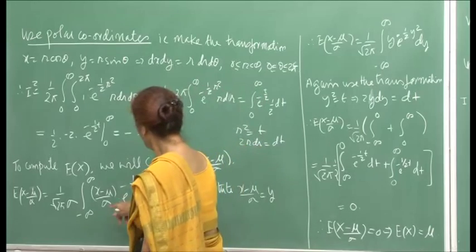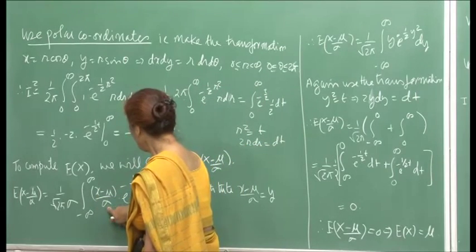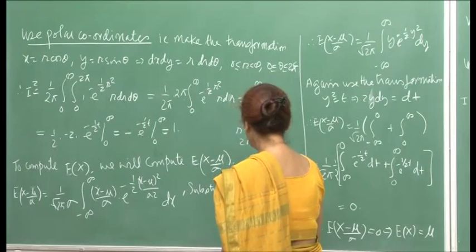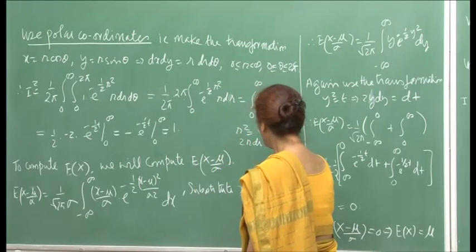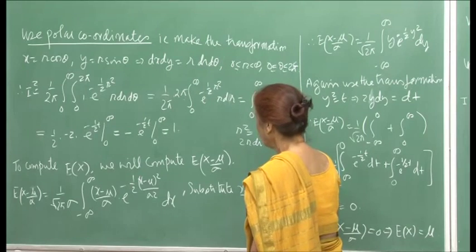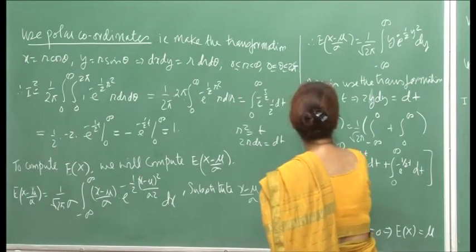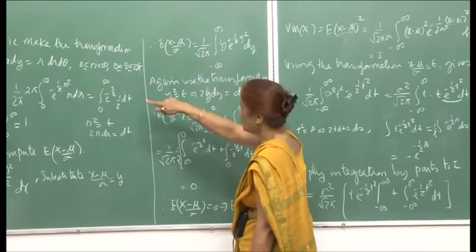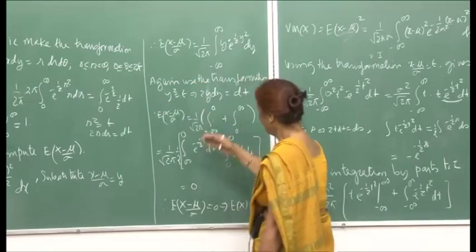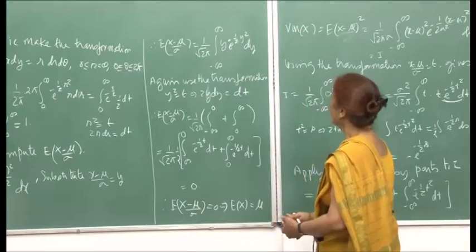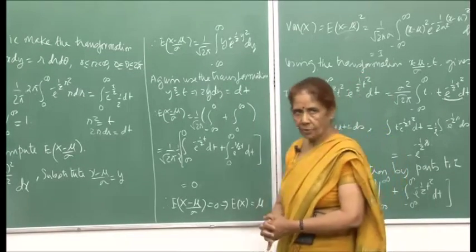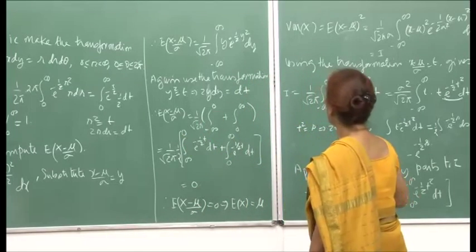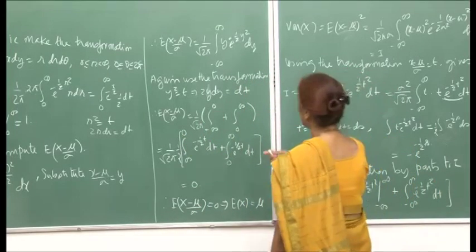Here, in this integral, you get the term (x − μ)/σ, and so I make the substitution (x − μ)/σ = y, which reduces the integral to this form. The expressions may look cumbersome, but the working is not very difficult. It is just a question of a little patience, and you start seeing where the calculations are going.